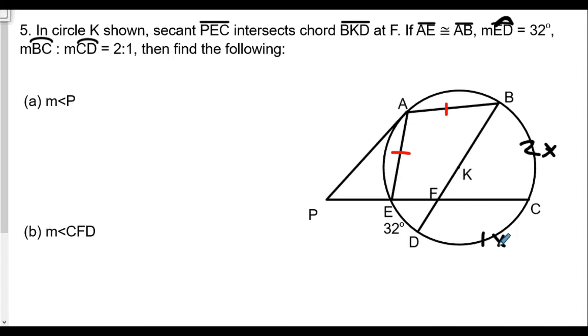One of the things we know in this case is that BKD is a diameter, so arc BC and arc CD must add up to 180 degrees because the two arcs form a semicircle. So we're going to do 2x plus 1x equals 180, which gives us 3x equals 180, or x equals 60 degrees.